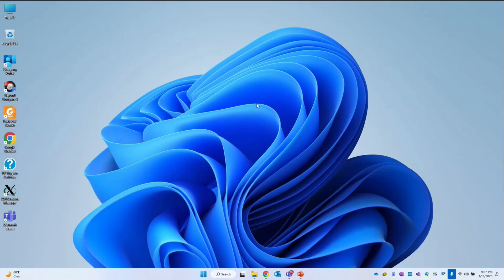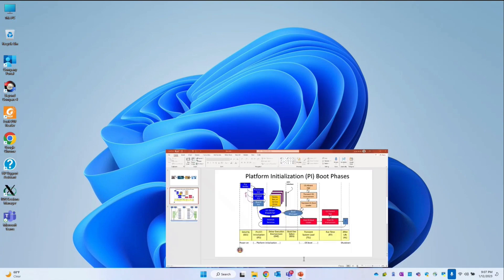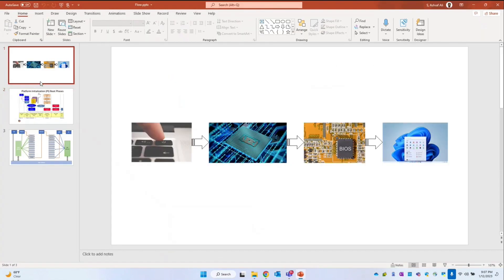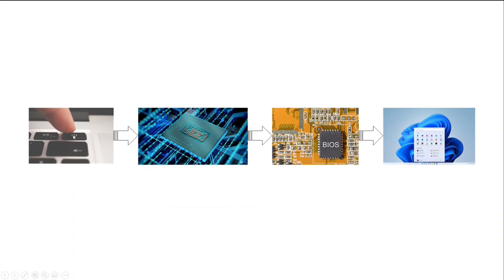Today we'll try to understand, once we power on the computer, how it is going to load the operating system. If I open the typical flow diagram, the user is going to press the power button — either on a laptop or a desktop. Once we press the power button, all the hardware components will get the power supply.